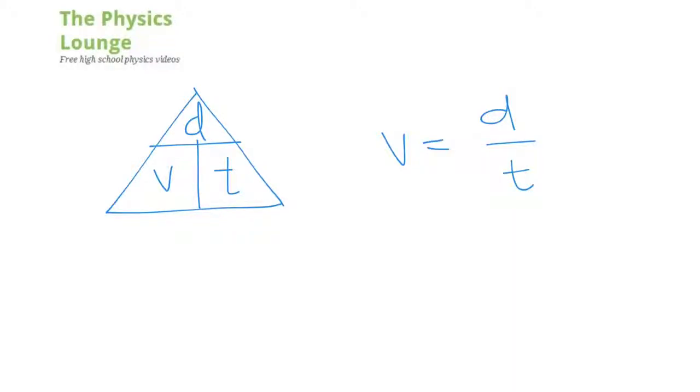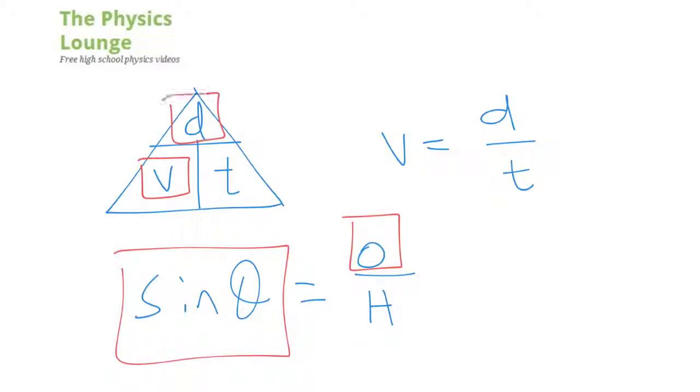You can even take it to use it for your trig functions. For example, we have sine theta equals opposite over hypotenuse. You can see that you could take the sine theta part, put it in where the V would be, and the opposite where the D would be, and then the T where the H is.